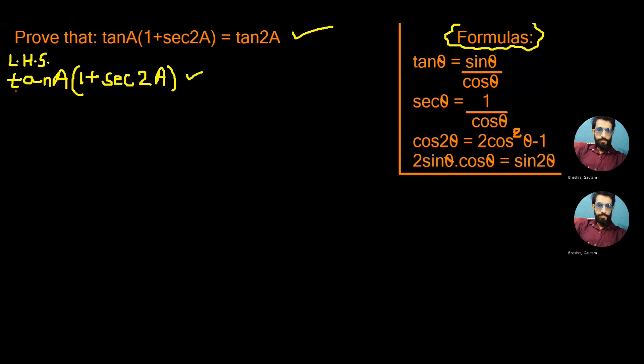Converting this tan A in its formula form, that is tan θ is equal to sin θ by cos θ, we can write it as sin A by cos A bracket 1 plus sec² A can also be written as 1 by cos² A.